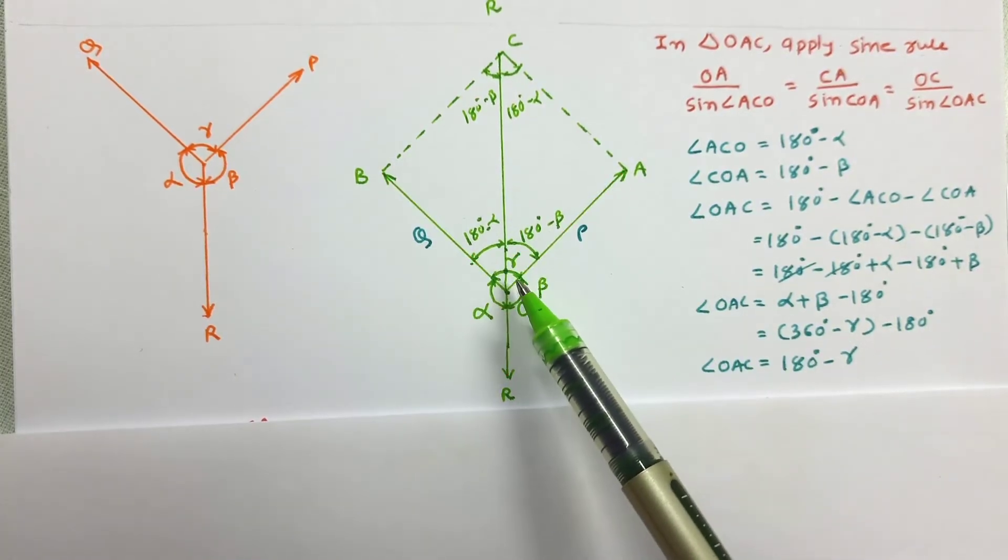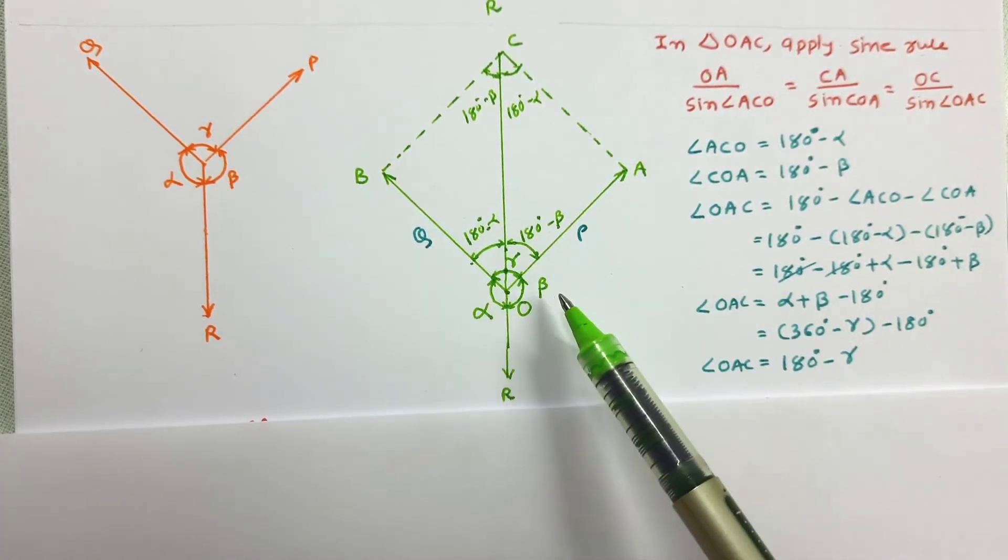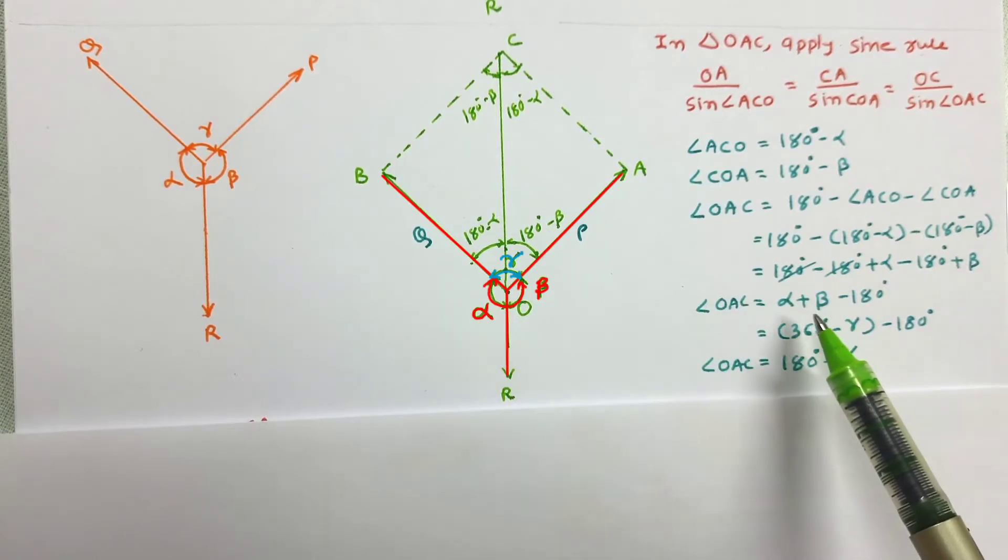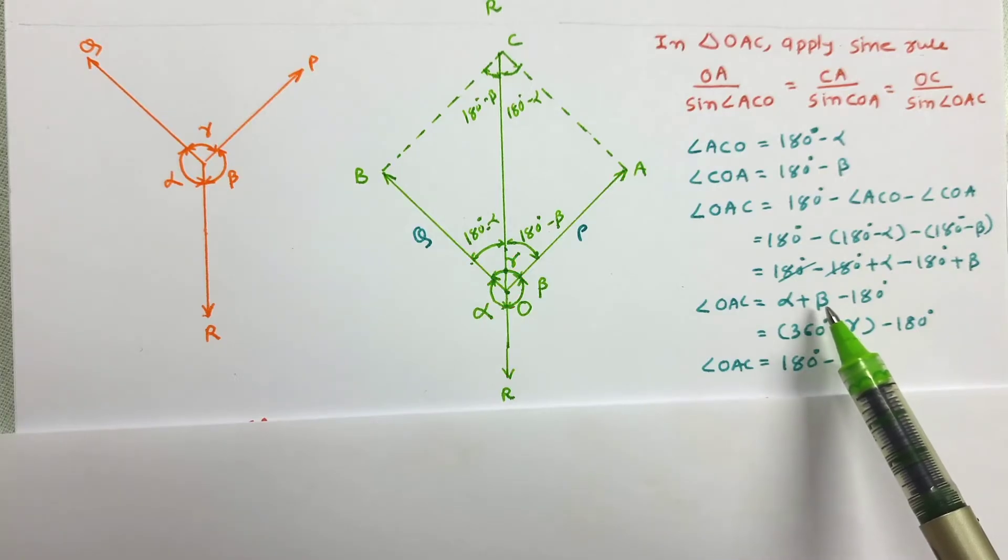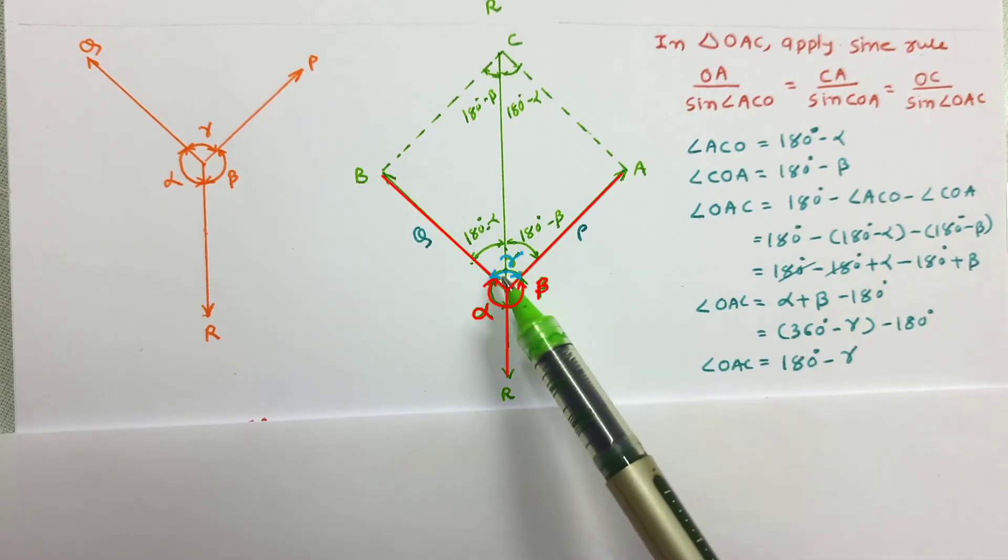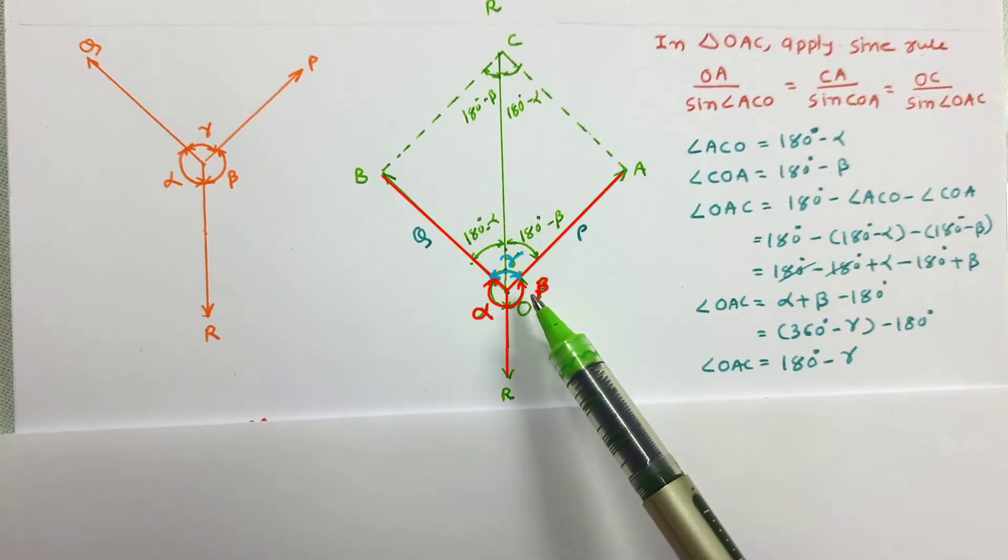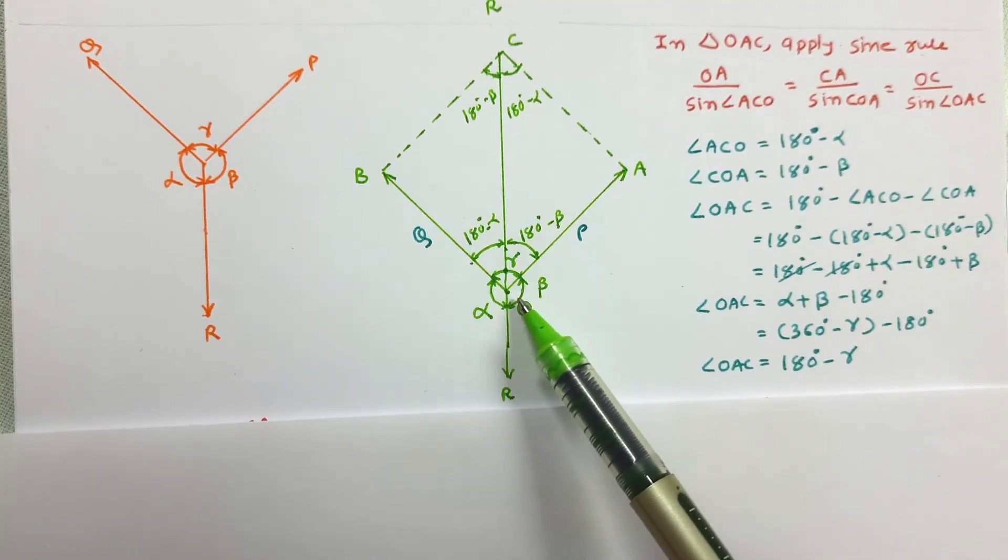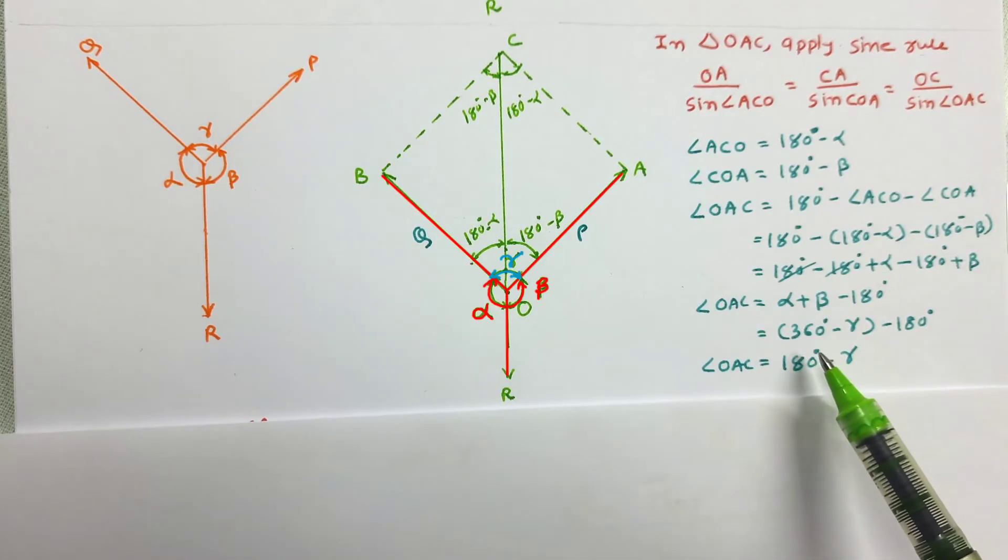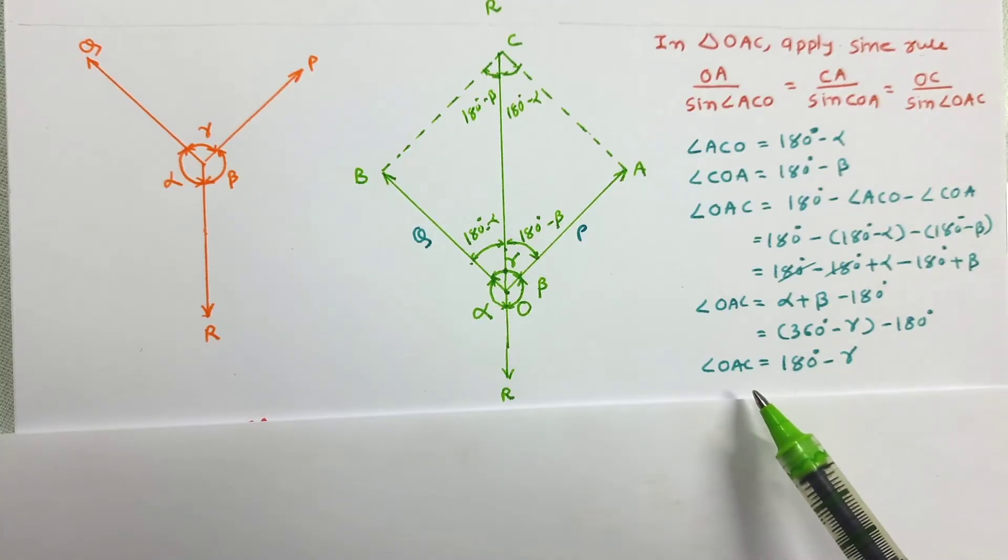Here we know that summation of alpha, beta, and gamma is 360. So we can write alpha plus beta, that is equal to 360 minus gamma. Total angle is 360. 360 minus gamma will give us this summation alpha plus beta. Here this value has been equated. And on simplification, angle OAC has been obtained as 180 degrees minus gamma.